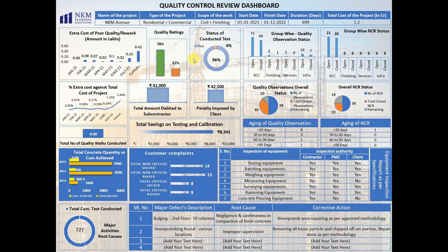On the left side of the dashboard you will find the Extra Cost of Poor Quality and Rework — the month-wise status showing how much extra cost you paid for poor work and rework. Beside that is the Quality Rating — in this project we have achieved 78% quality rating. Beside that is the status of tests conducted with pass and failed status. Below that are the penalty imposed by the client, the total amount debited to the subcontract, and the extra percentage cost against the total project cost month-wise, plus the number of quality walks conducted at your site.